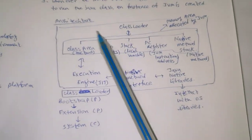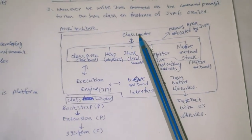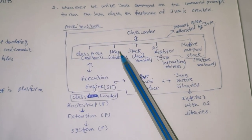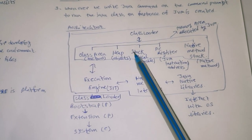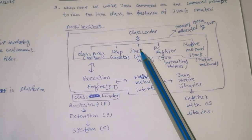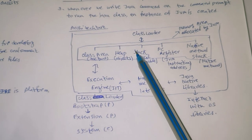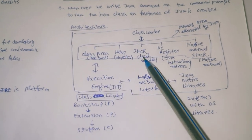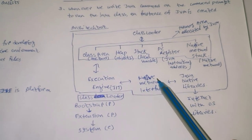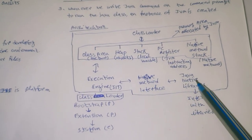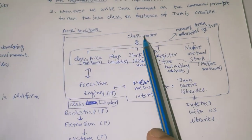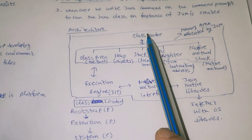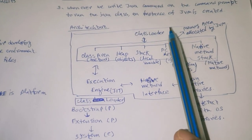Here is the architecture of JVM. First, there is the class loader. Next, JVM allocates a memory area. After that, there is the execution engine, the native method interface, and Java native libraries.